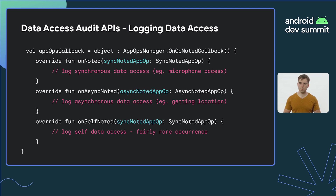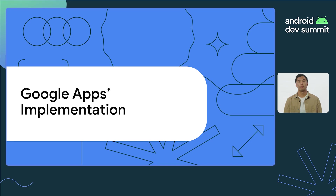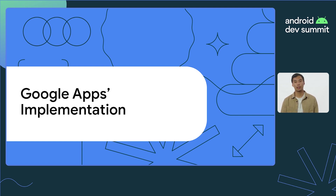Together, these best practices can dramatically reduce user denial of permission requests and increase user trust in your app. I'm going to hand it over to Terrence, who will be discussing some examples of these best practices in action. The following examples show how Google's apps follow permission best practices and will hopefully help inspire you in your feature planning and development processes to prioritize users' privacy.